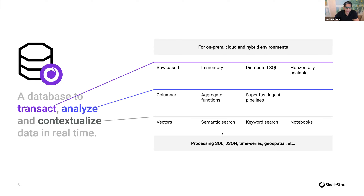At a very high level, you can use both SQL, and we recently added compatibility for MongoDB APIs so you can bring in JSON data from Mongo. It also has support for time series, geospatial, and other data types. You can store data as rows or columns, which makes it extremely fast — in fact, compared to a few databases, it's about 800 times faster for aggregate functions and analytics.